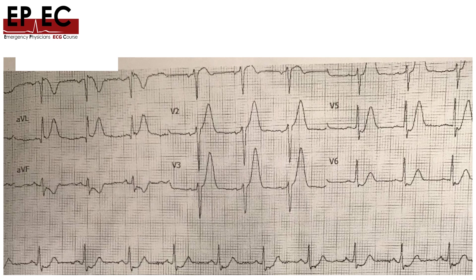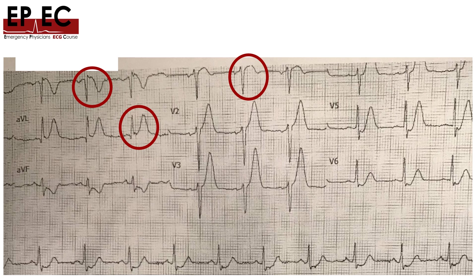Let's analyze the ECGs. The first thing that should catch your eye is the ST elevation in aVR. ST elevation in aVR, especially when associated with ST elevation in V1 and aVL — as in this case — and in the presence of diffuse ST depression in most other leads, is a really bad sign indicating a severe STEMI. We could stop now and activate the PCI, but there is another finding I want to focus on.